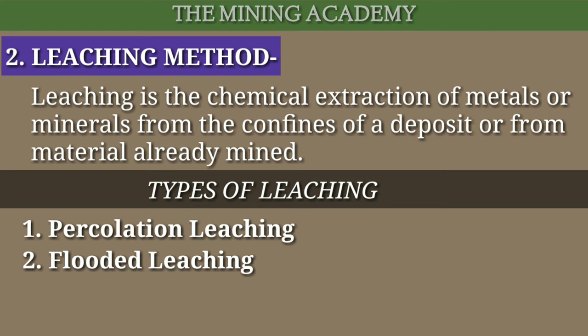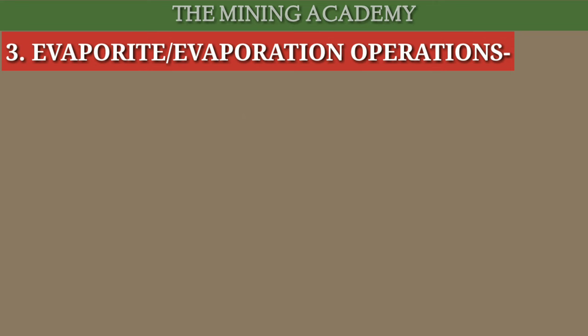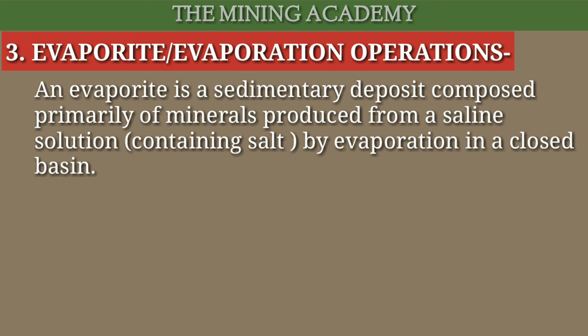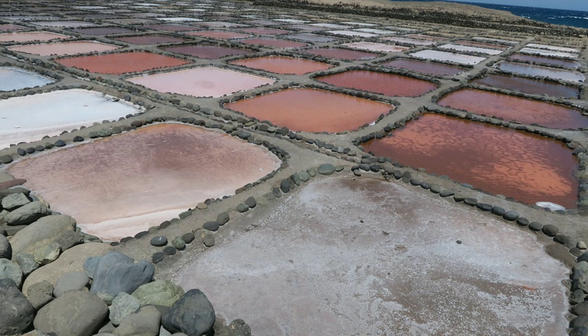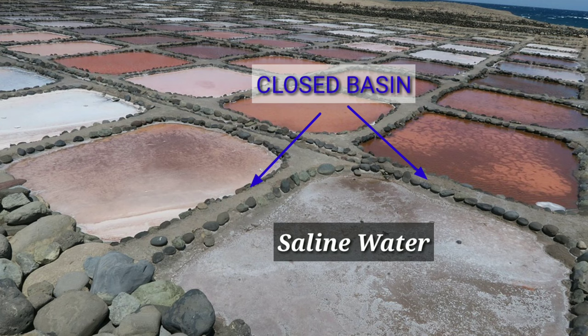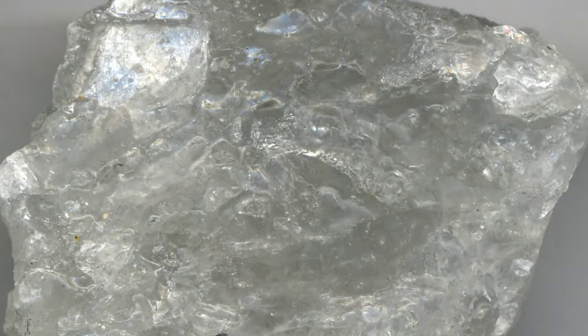Solution mining ki third and last method hai evaporate ya evaporation operations. Is method mein evaporation ke dwara minerals ko extract kiya jaata hai. Aise rocks ya minerals sedimentary deposits mein aate hain. Is method mein evaporation ke liye solar energy ki zaroorat padti hai. Minerals jaise halite jise NaCl bhi kehte hain, potash and trona — trona ek non-marine evaporite mineral hai. Saline water ko pahle closed basin mein collect karte hain aur ise evaporation hone ke liye sun ke samne chhod dete hain. Kuch dinon ke baad isme liquid nikal jaata hai aur evaporite rock ka formation ho jaata hai. Is tarah hum water se mineral extract kar lete hain.